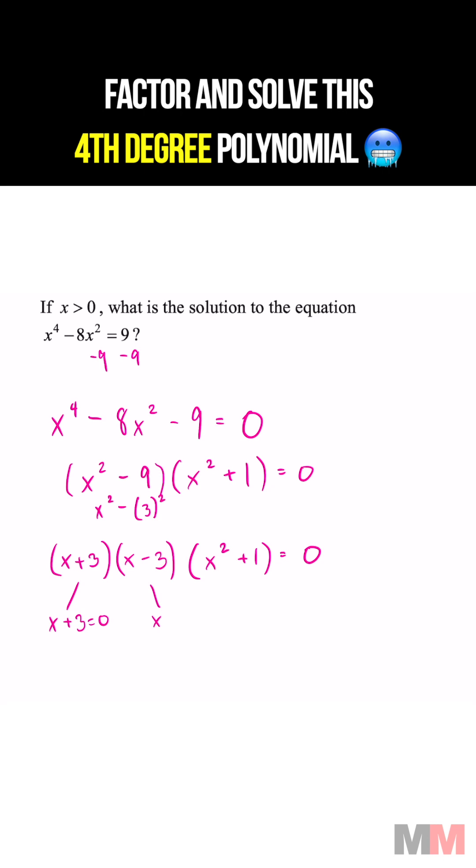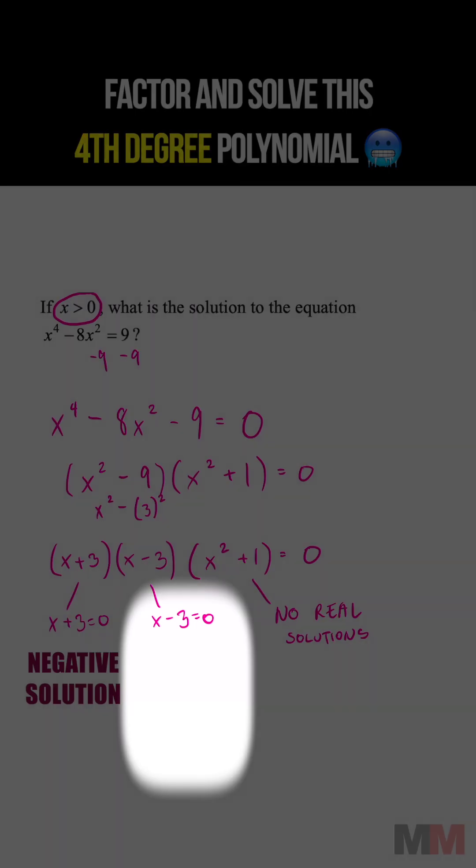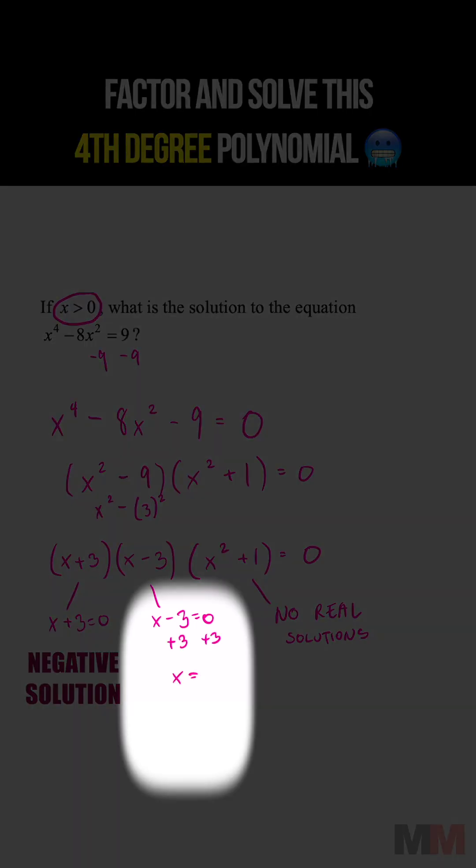x plus 3 equals 0, x minus 3 equals 0, and we just said no real solutions for that one. We're trying to look for one where x is more than 0, which is going to be this equation right here, and that gets you x equals 3.